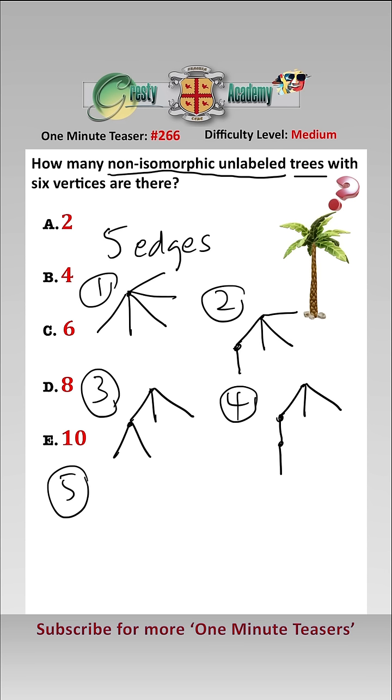The fifth way we can arrange it is again one vertex has three edges and two different other ones have two edges like that. Note these are different. They're not isomorphic.